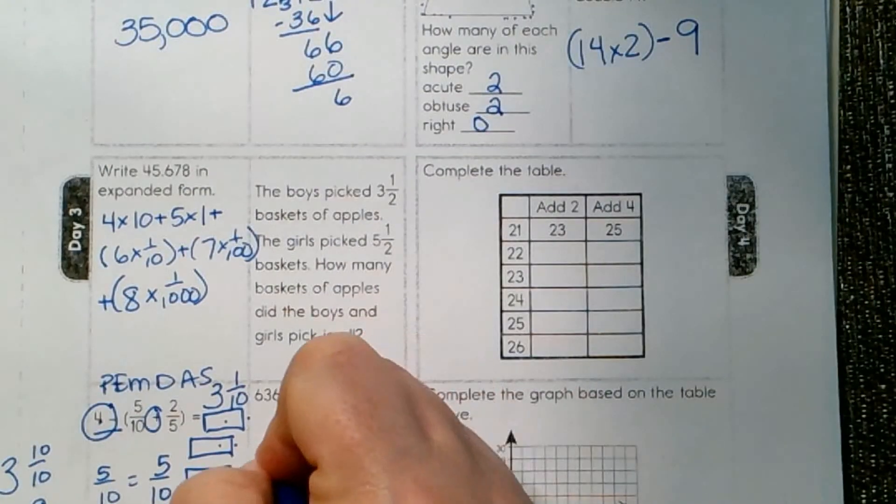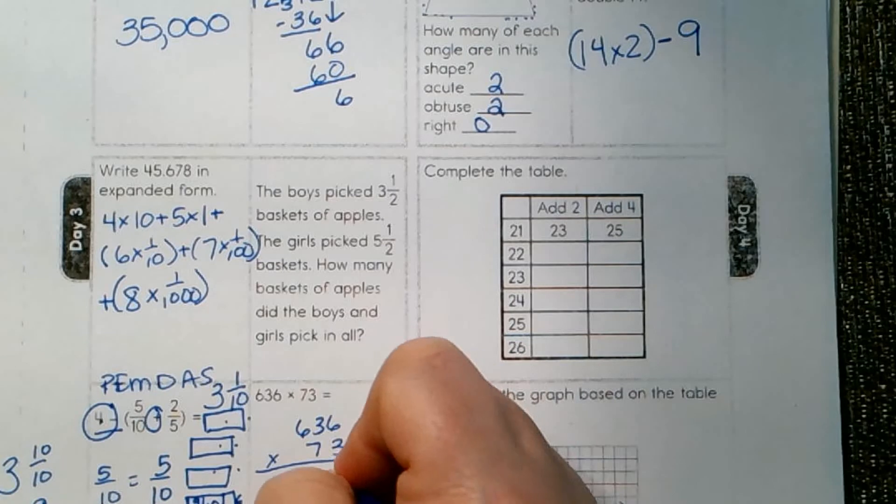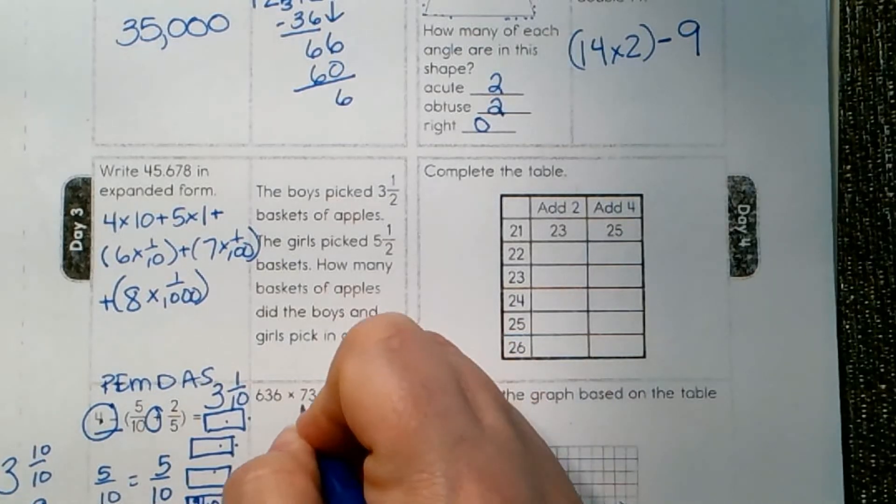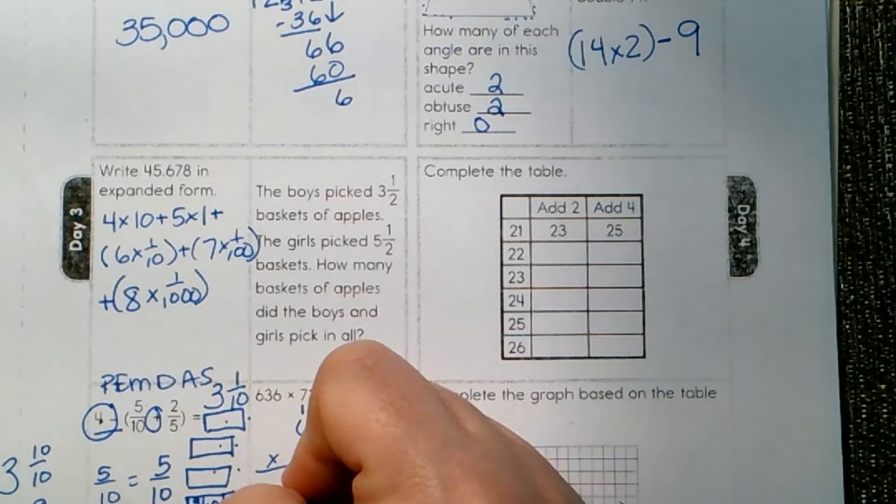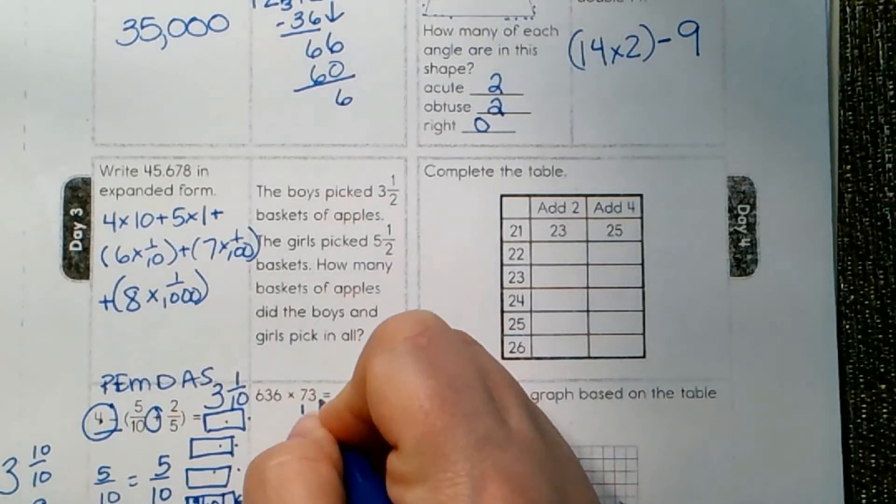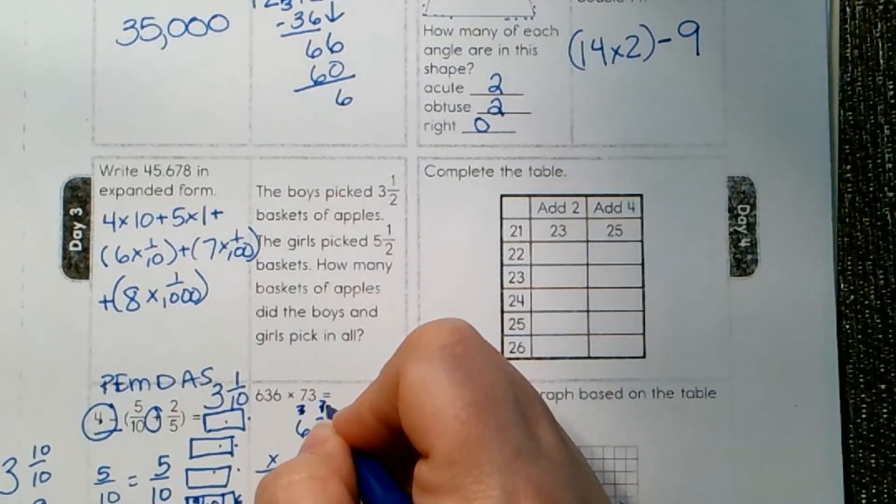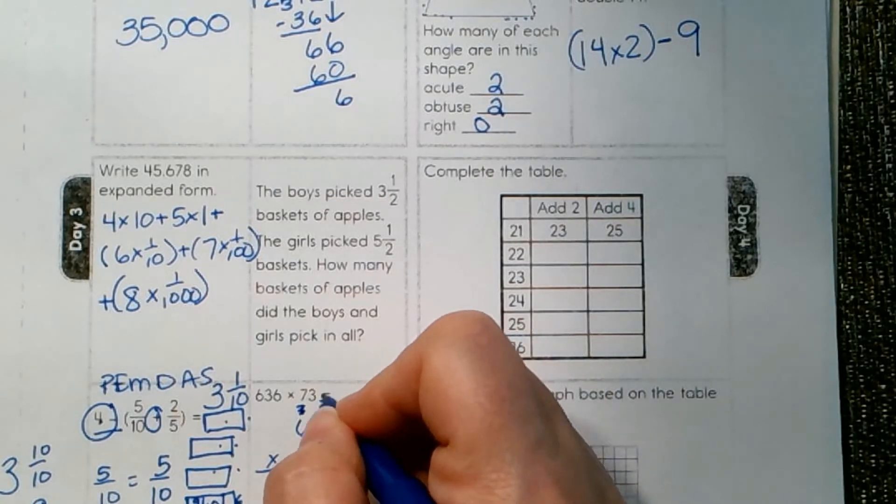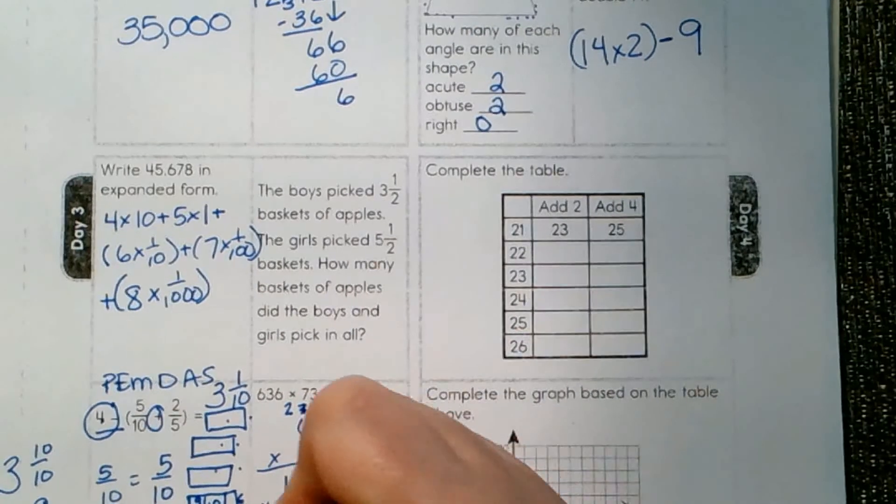So, 636 times 73. 3 times 6, 18. 3 times 3 is 9, plus 1 is 10. 3 times 6, 18, plus 1 is 19. Make your mom happy. 7 times 6, 42. 21, 22, 23, 24, 25. 7 times 6, 42, 43, 44.